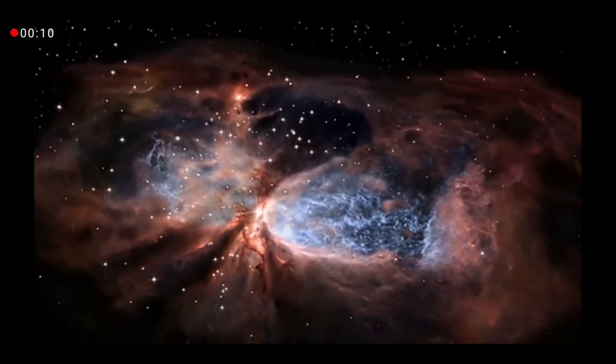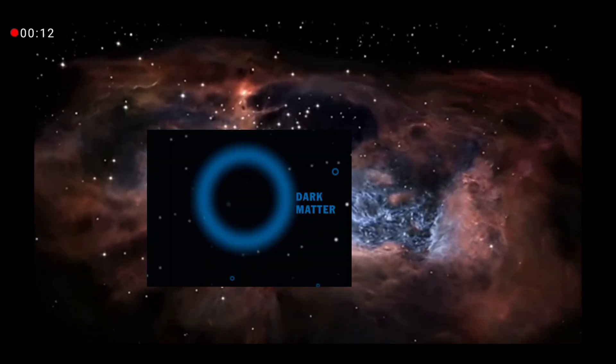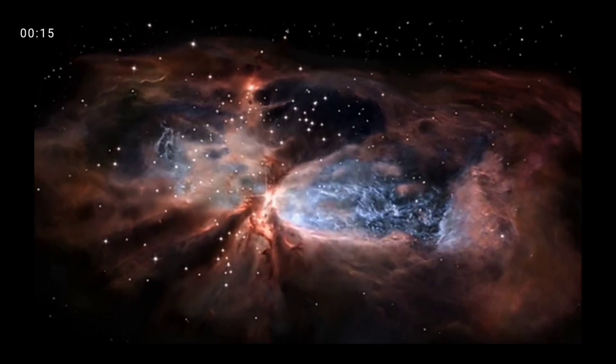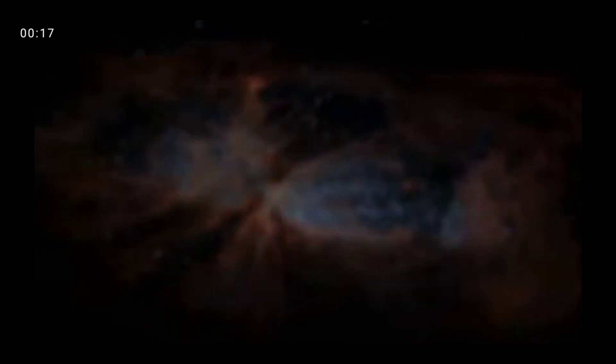Dark matter is called dark because it does not appear to interact with observable electromagnetic radiation, such as light, and so it is undetectable by existing astronomical instruments.